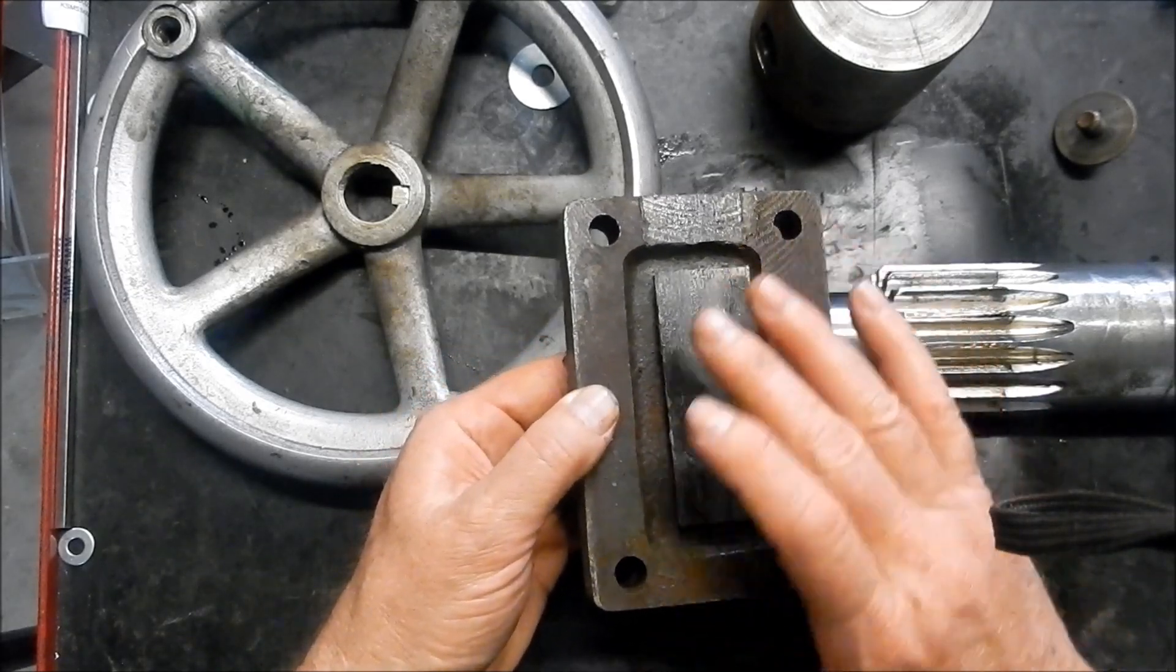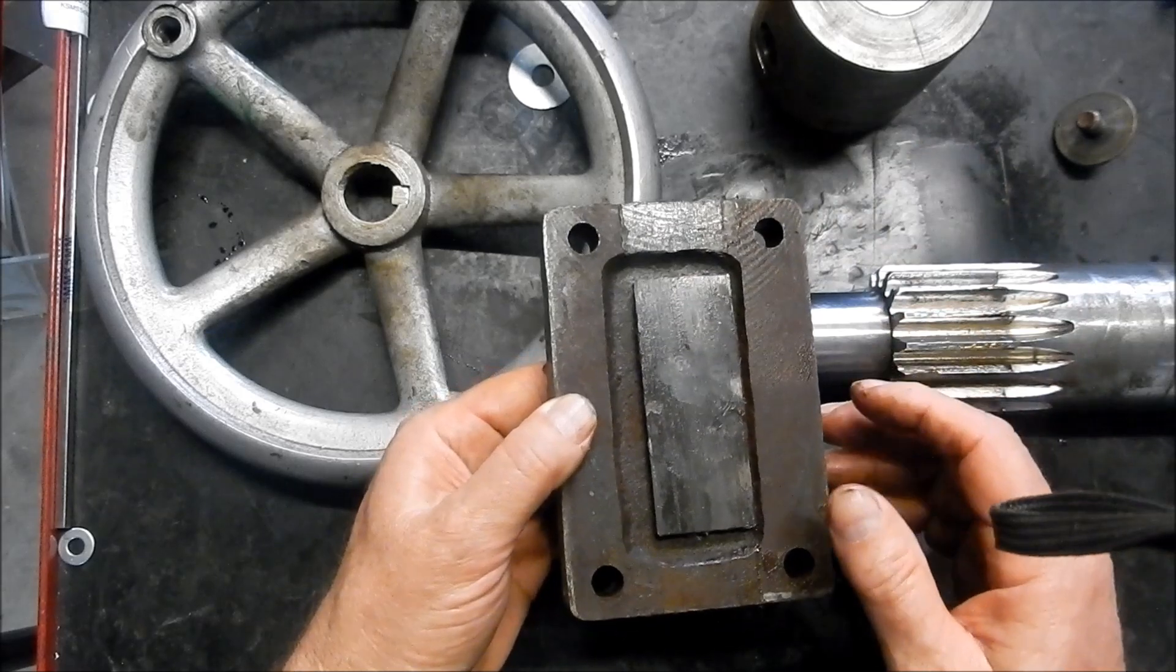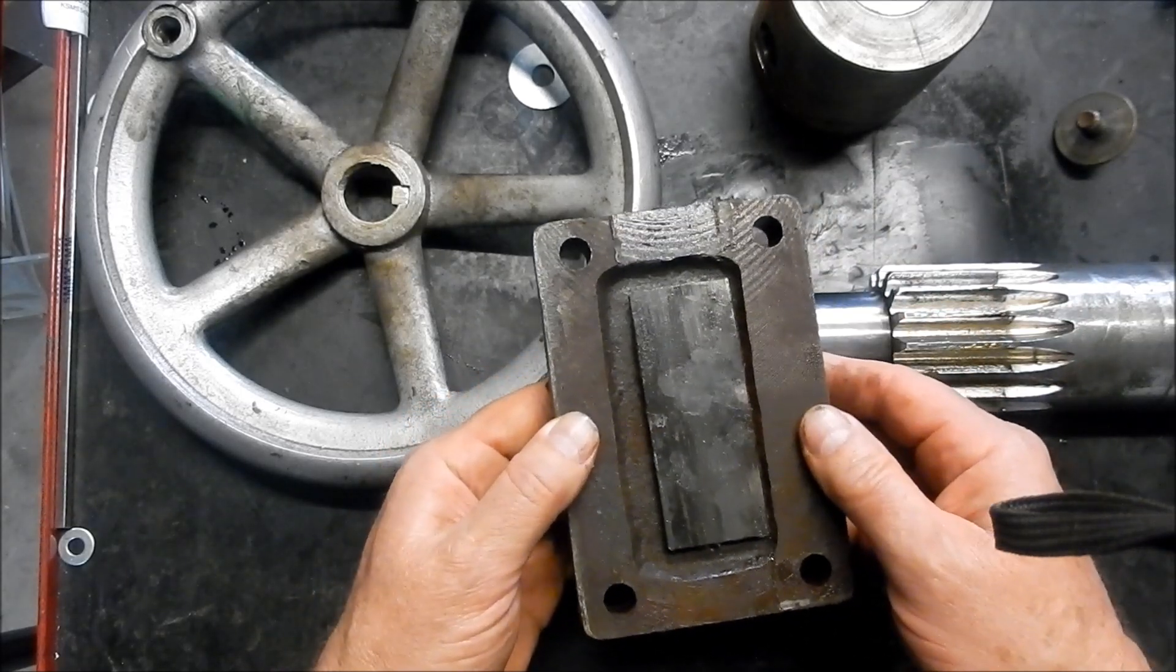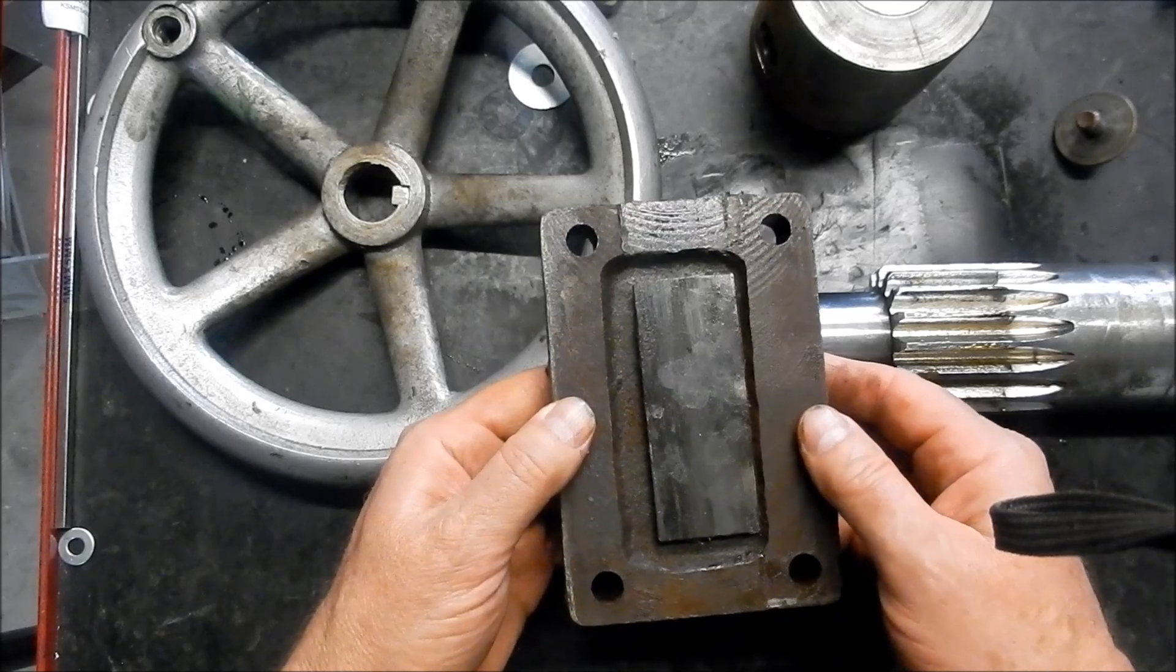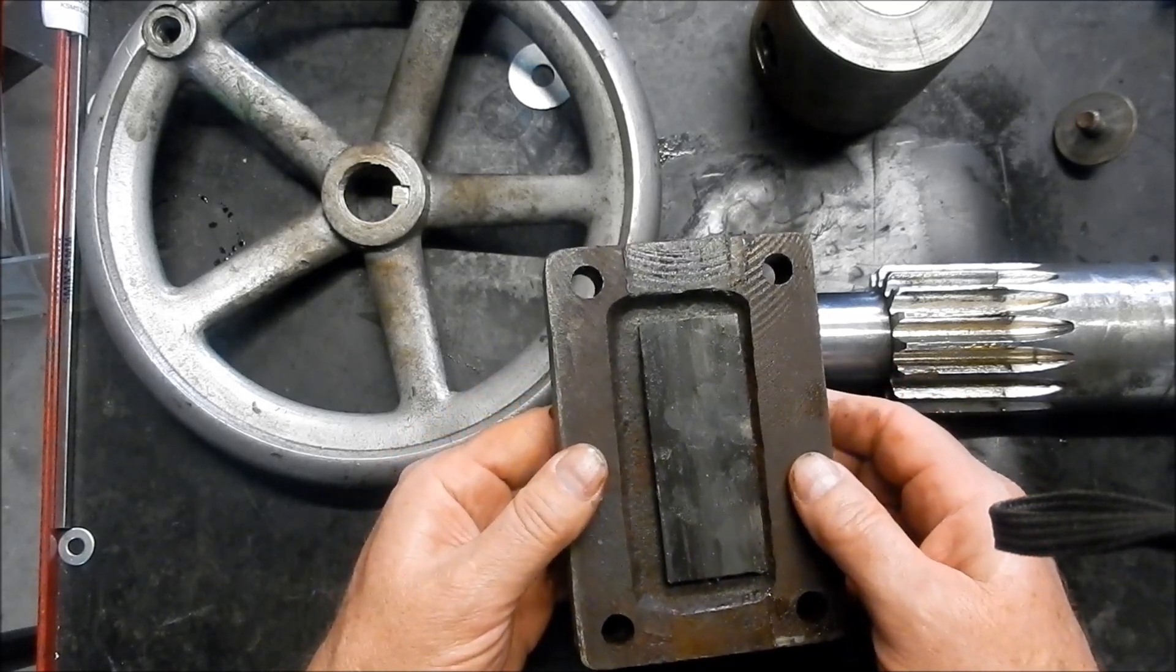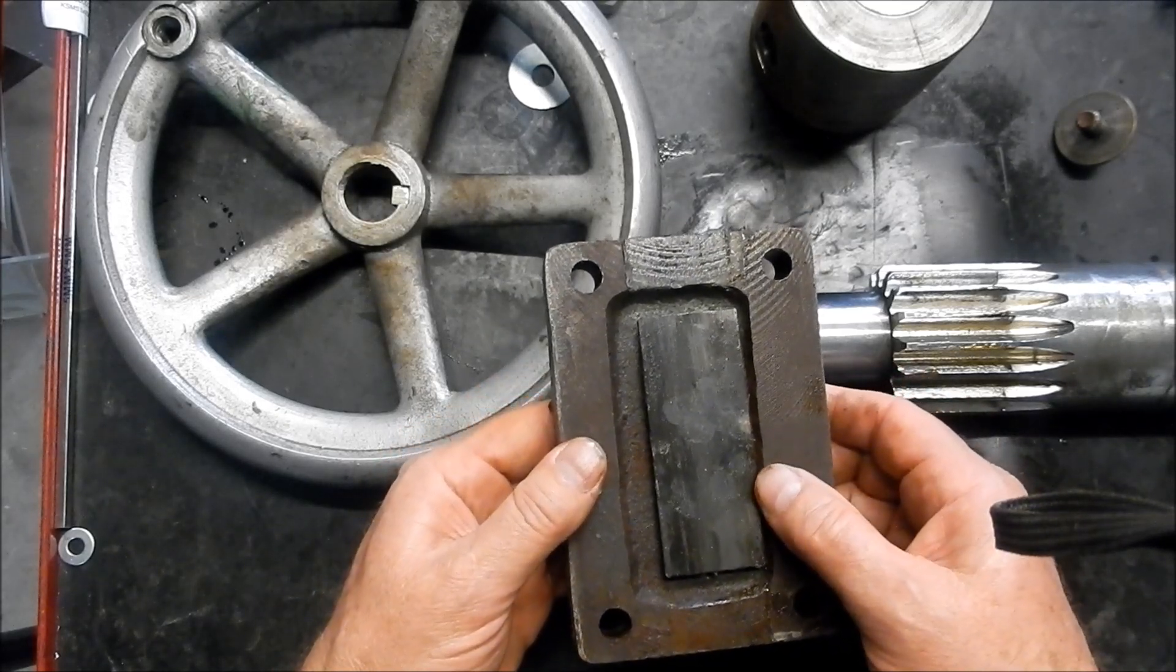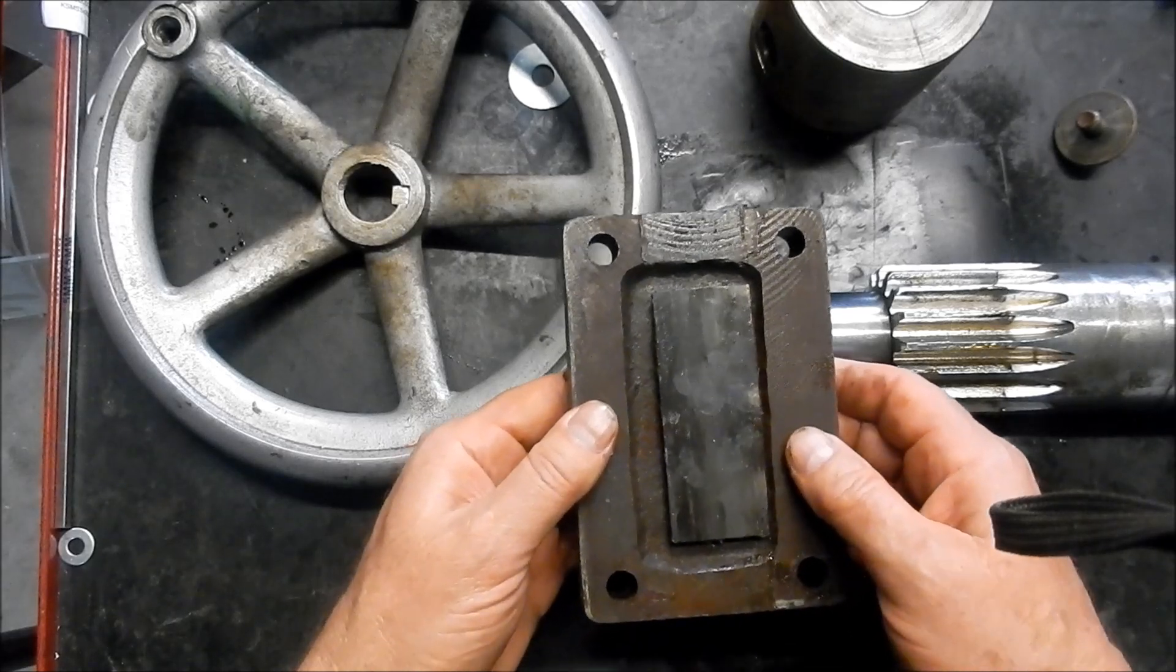As I said, we use the Delrin buttons or Delrin bushes just to push up against the side, just to take out, stop that ram dropping down under his own weight, just to create that little bit of drag.